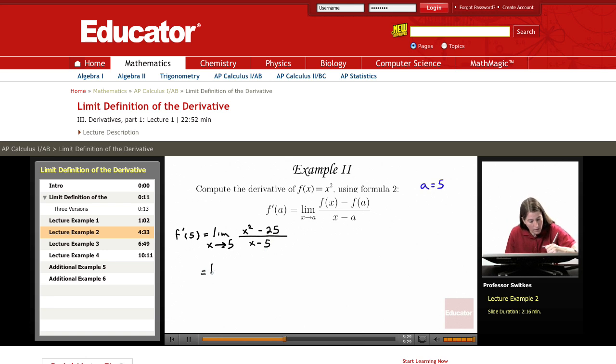So again we have the limit as x approaches 5, and now we do whatever algebra we can think of to simplify this fraction. And here notice that x squared minus 25 is a difference of squares, and so we can factor it as x plus 5 times x minus 5, and then our denominator still is x minus 5.